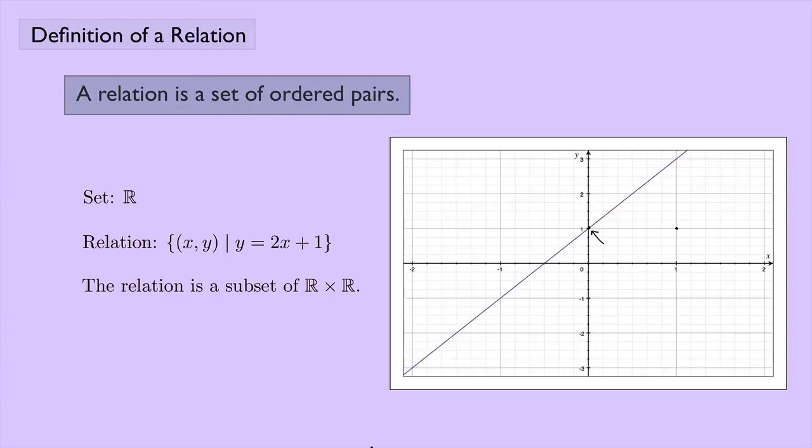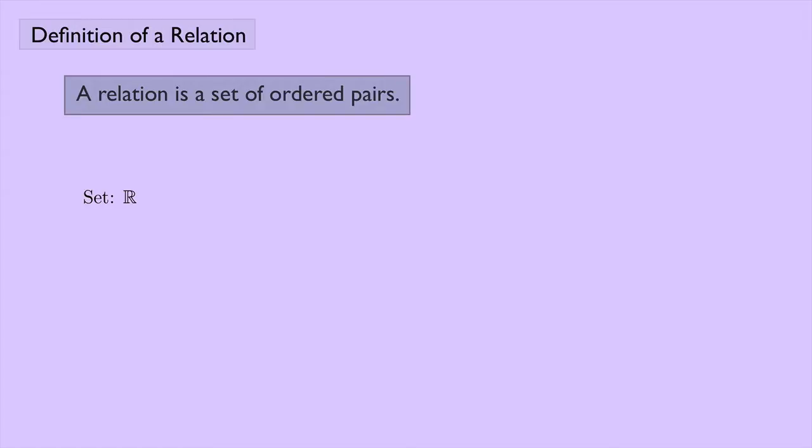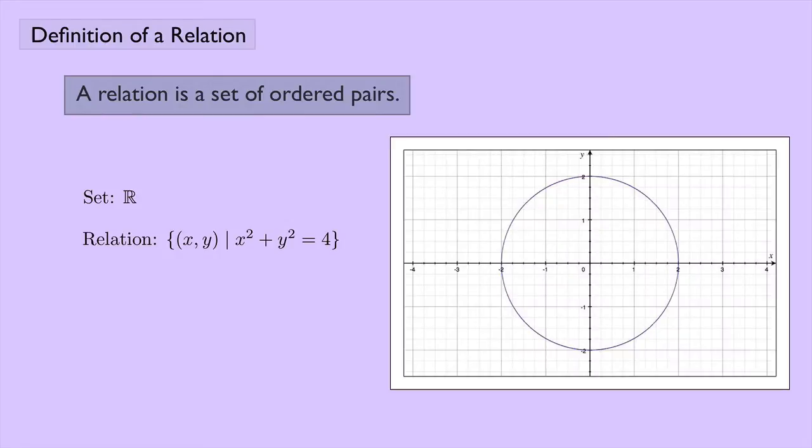Let's look at another example. Let's try the set of real numbers again, and this time we'll let the relation be the set of ordered pairs (x, y) such that x squared plus y squared equals 4. You can graph this—it would look like a circle centered at the origin with a radius of 2.